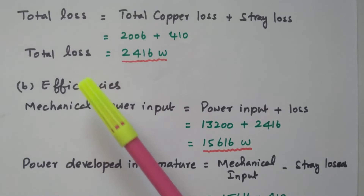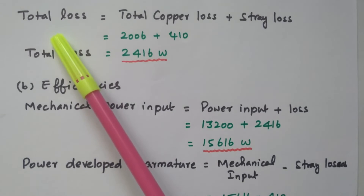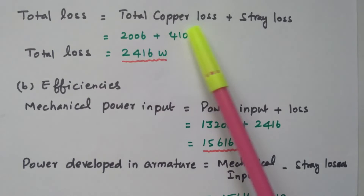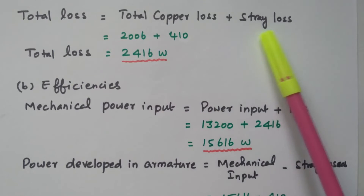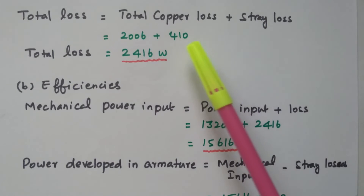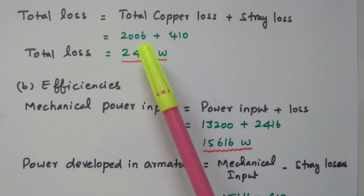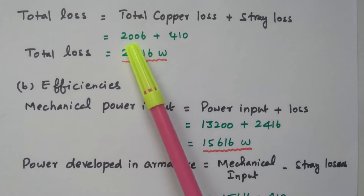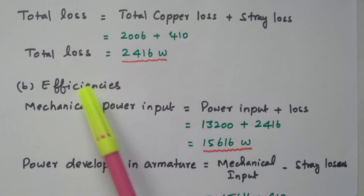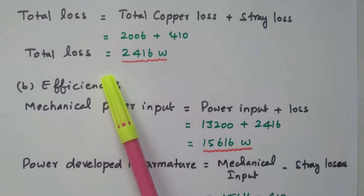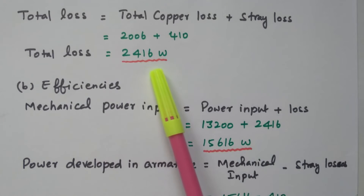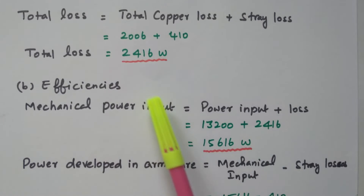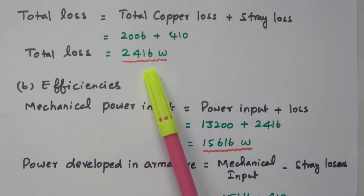Now we can calculate the total loss. Total loss = total copper loss + stray loss. The stray loss given in the problem is 410 watts and the total copper loss calculated is 2,006 watts. So the total loss is 2,416 watts.